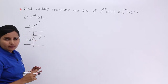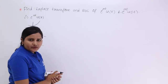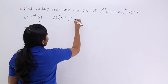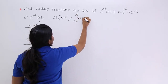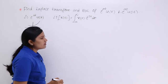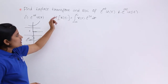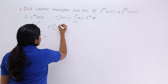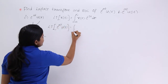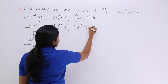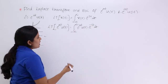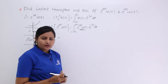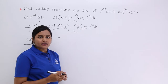For this signal, we need to find the Laplace transform and ROC. The fundamental Laplace transform equation is: L{x(t)} = integral from minus infinity to infinity of x(t)·e^(-st) dt. To find the Laplace transform of e^(at)u(t), we substitute the signal, giving the integral from minus infinity to infinity of e^(at)·u(t)·e^(-st) dt. Since u(t) equals 1 from 0 to infinity, it changes the limits to 0 to infinity.